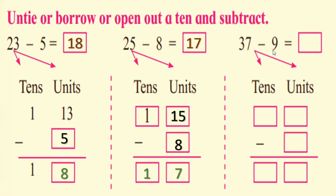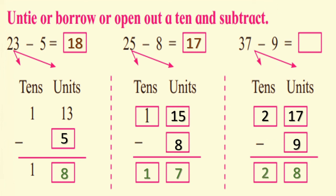Last: 37 minus 9 equals how much? In the tens and units: 17 units and 2 tens. Minus 9: 17 minus 9 equals 8. And here 2 remains. So 37 minus 9 is equal to 28.